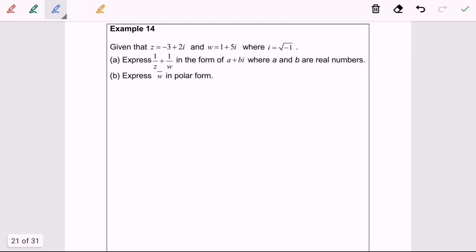Given that z equals negative 3 plus 2i and w equals 1 plus 5i, where i equals square root of negative 1, part (a) express 1 over z plus 1 over w.